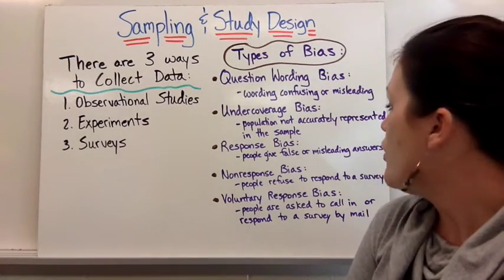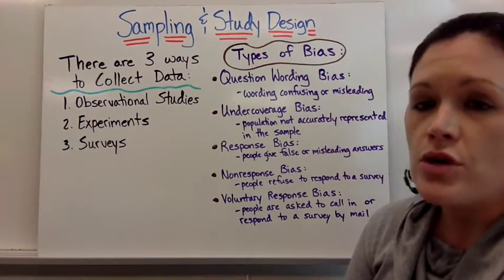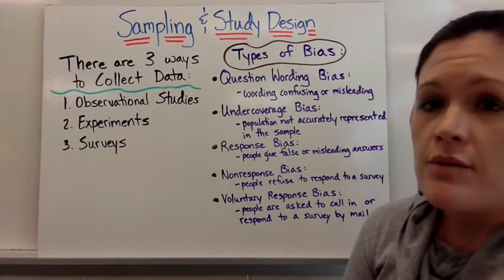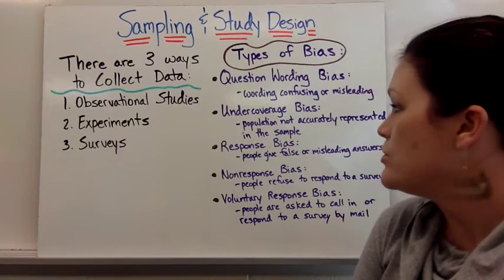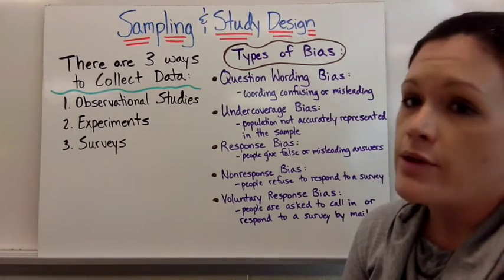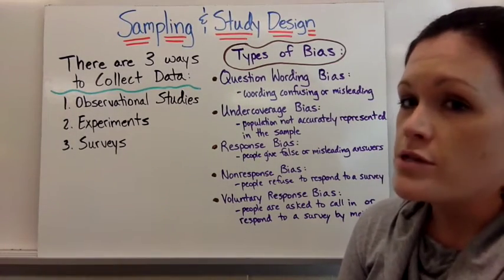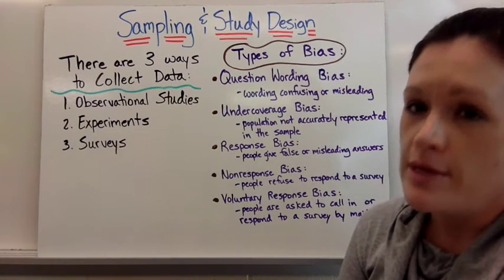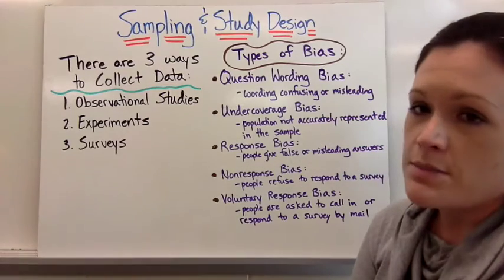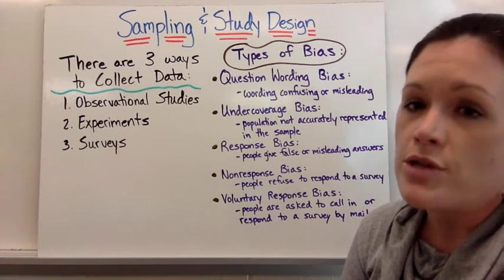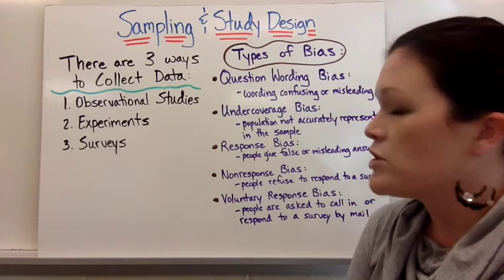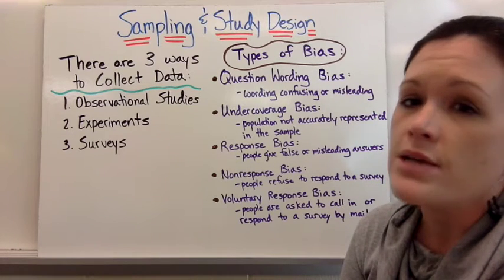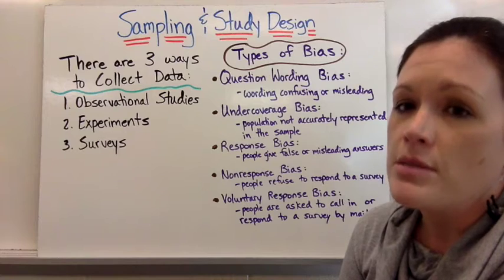Response bias is when people give false or misleading answers. Sometimes what they say in response to a question could not be accurate — like they tell you they don't drink when they really do, or they never play with their cell phone in class but they do. You can have response bias especially when people don't want to give you the truth. To help eliminate that, you'd want to give the survey anonymously so people are more willing to be honest.